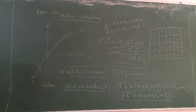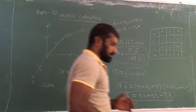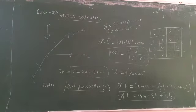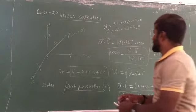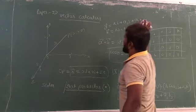Next, we go to the vector product, also known as the cross product. The cross product is denoted by a cross symbol. The cross product of two vectors gives another vector.